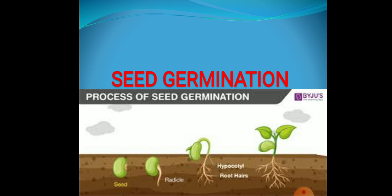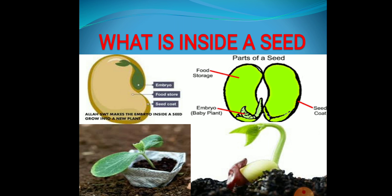Now children, you must be wondering how does a plant grow from a seed? What is inside the seed that makes a new plant grow from it? In this picture, you can see what is inside a seed. Inside the seed, there is an embryo. Embryo means a baby plant. And cotyledons — cotyledons are the part which stores food. Before the plant starts photosynthesis, the baby plant uses the food stored in the cotyledons.